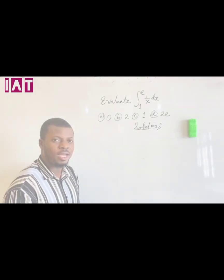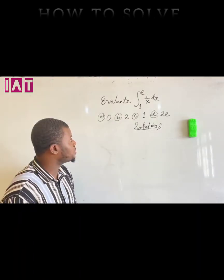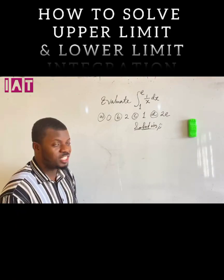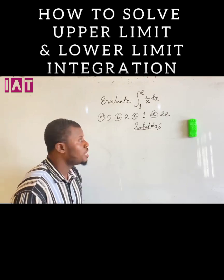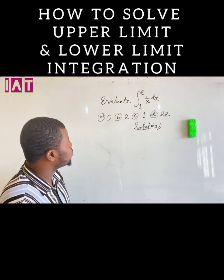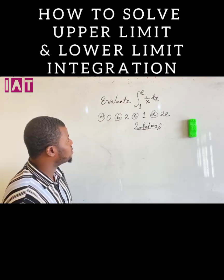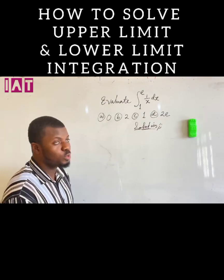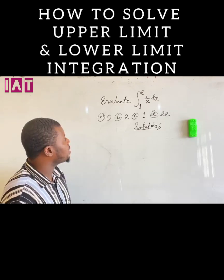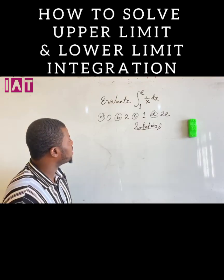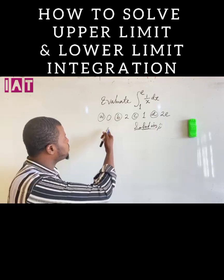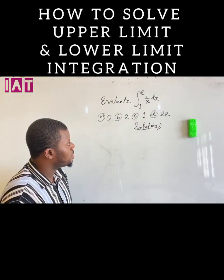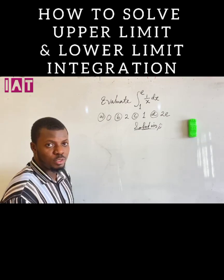Hi guys, here we are going to look at a very interesting problem on integration. We are asked to integrate 1 over x plus x from 1 to e. And there are options: the first option is 0, 2, 1, and e.